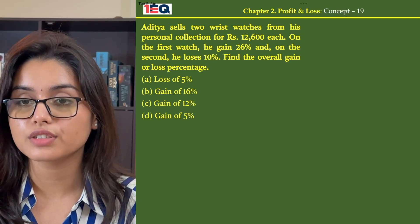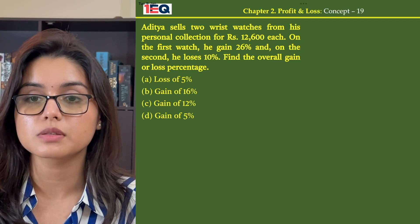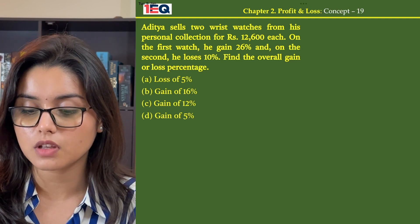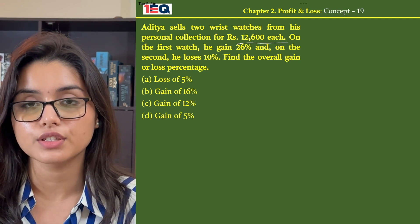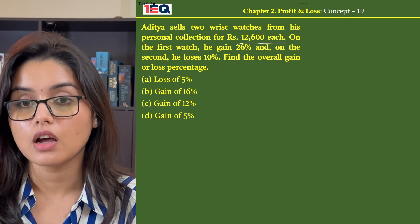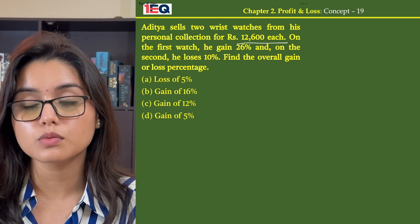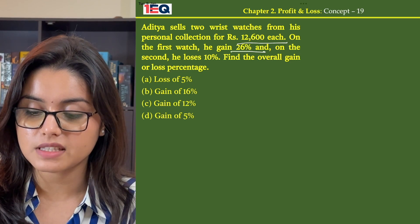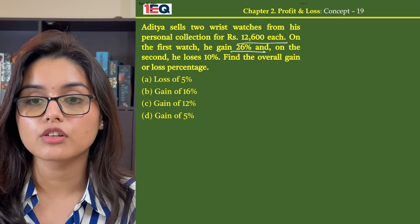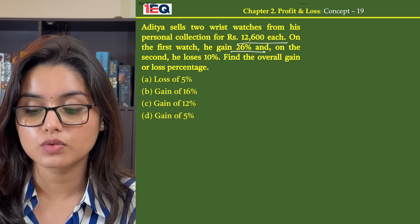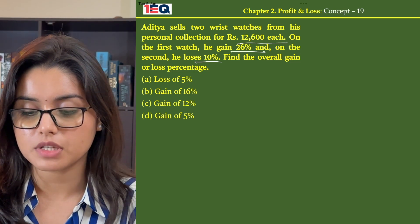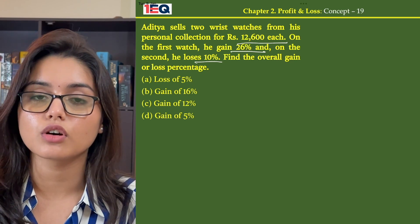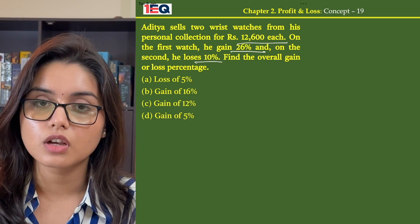Aditya sells two wrist watches from his personal collection for Rs 12,600 each. On the first watch he gains 26% and on the second he loses 10%. Find the overall gain or loss percentage.